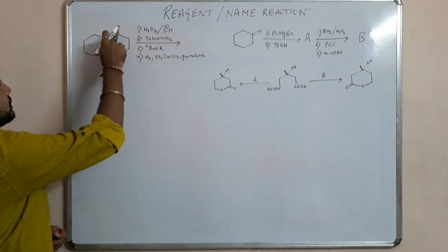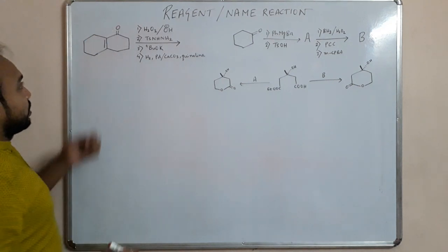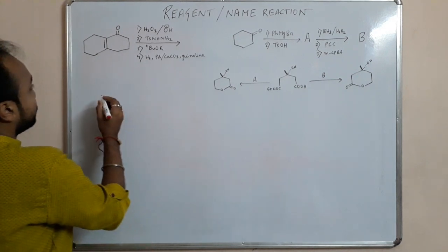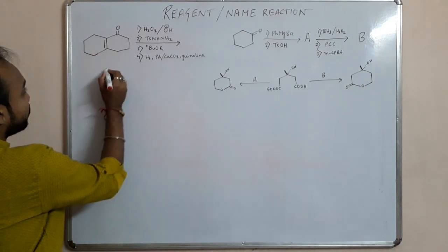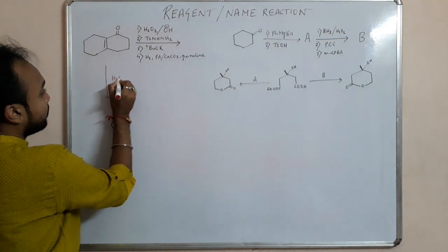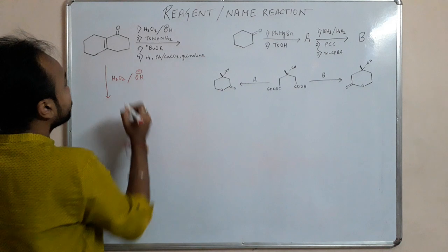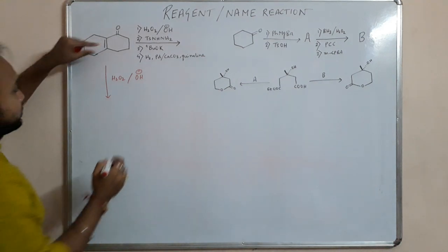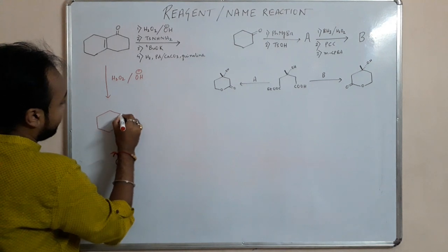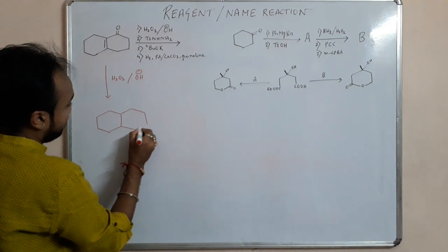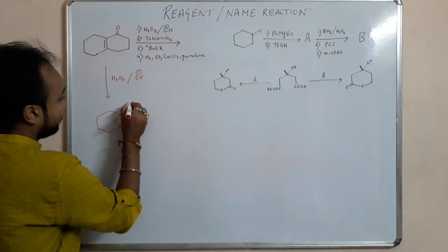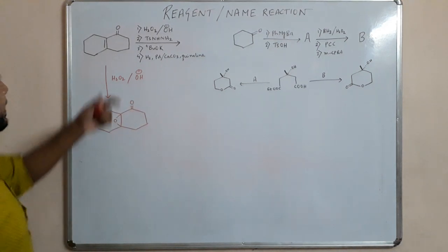What will happen? This is a conjugated ketone, alpha beta unsaturated ketone. So this alpha beta unsaturated ketone in presence of H2O2 base undergoes an epoxidation reaction, right? So it will be epoxidation reaction in the next step.